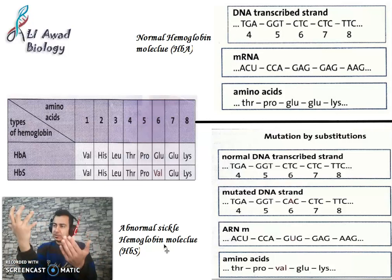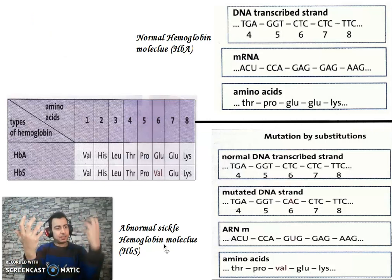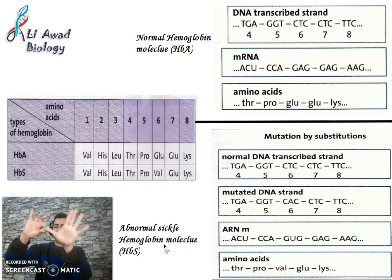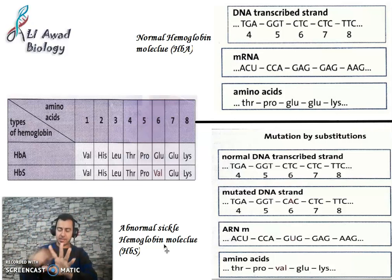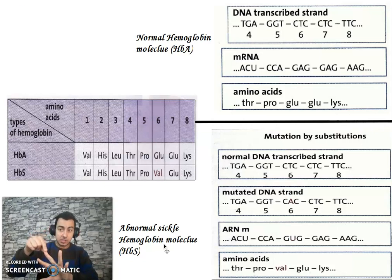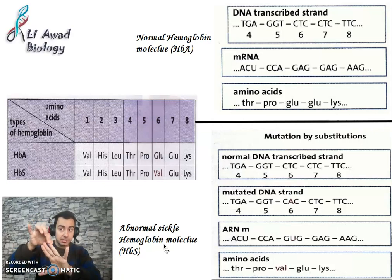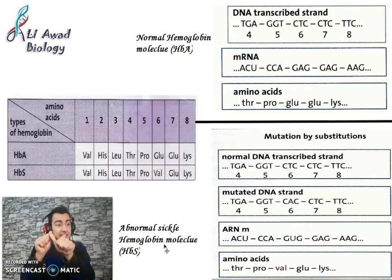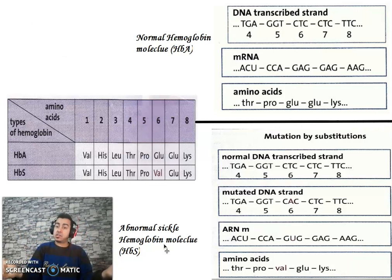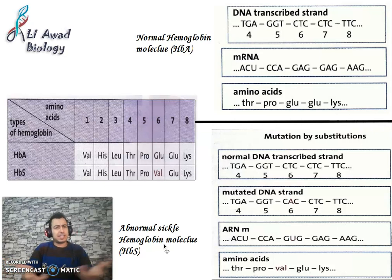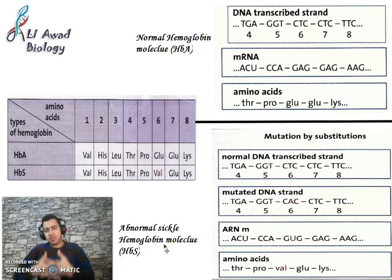Because the protein is changing, the phenotype is changing. DNA changes, mRNA changes, protein changes, phenotype changes. The DNA changes, and the gene is changed. This changed form of the gene is called an allele. An allele is a shape of the gene.